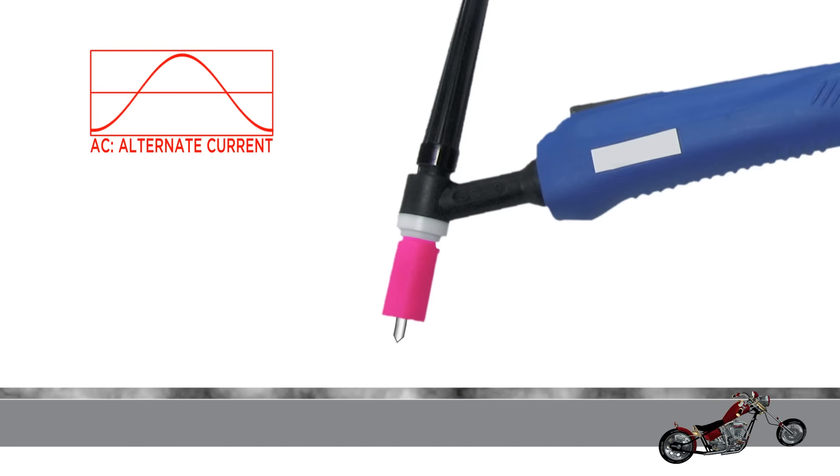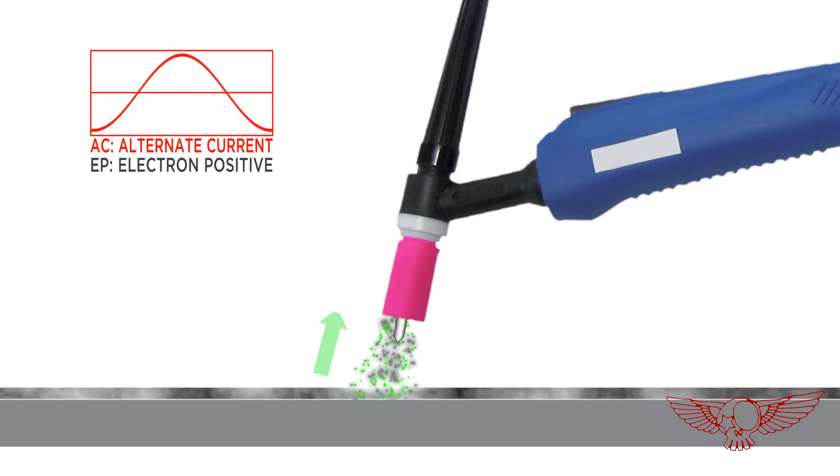During the first cycle, called EP or Electro positive, where the current flows from the workpiece to the electrode, the aluminum oxide is blasted off the surface creating a clean area.